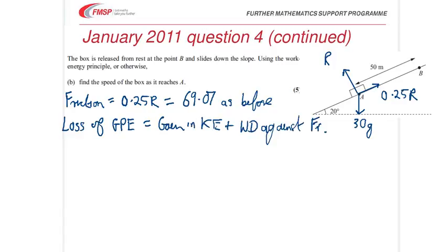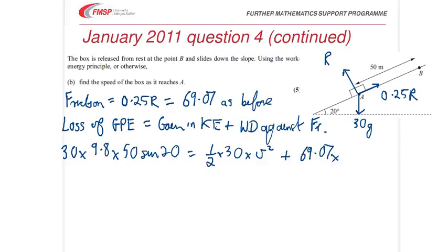It's worth writing an outline like that, just to show the examiner you know what you're doing. So, again, plugging in the numbers here, we've got 30, MGH, 30 times 9.8 times 50 sine 20, equals a half times 30 V squared, half M V squared. Plus the work done against friction, which is 69.07, that's the friction force, as before, times 50.